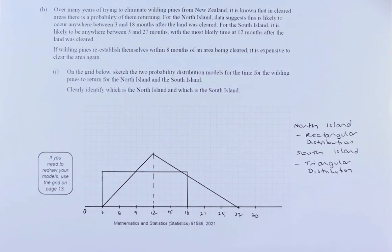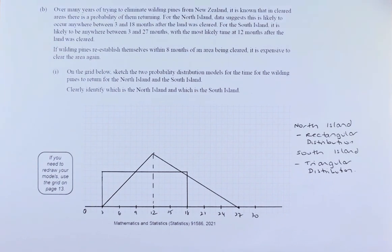Good day! In this video, we are going to try and solve question 2B of the 2021 NCAA Level 3 Probability Distribution Paper. There are three parts to this question, so if you can answer all three parts, you're getting an excellent for this part of the question. Without further ado, let's read part 1.